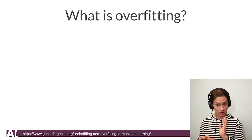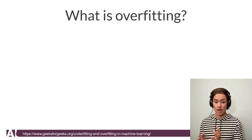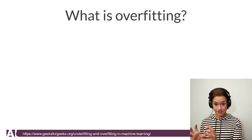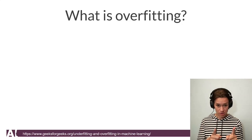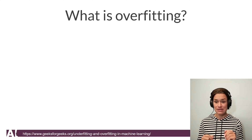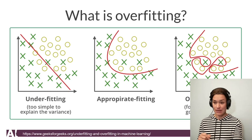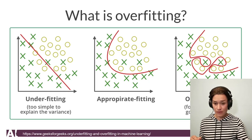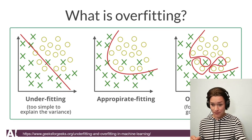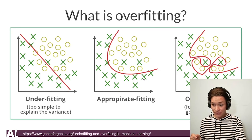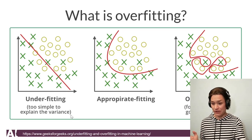It's going to do a great job on what you trained it on, but then when you add new images — new data that the algorithm didn't see — it's not generalizing enough. On the right we have overfitting, in the middle appropriate fitting, and on the left underfitting.